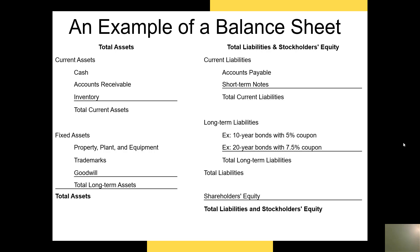Below current assets we have fixed assets, which include property, plant, and equipment, but also trademarks, copyrights, patents, and goodwill. The valuation of trademarks, patents, and copyrights depends on whether they were acquired by our company — if acquired, we can report them on the balance sheet according to GAAP principles; if created internally, we cannot. Goodwill refers to the premium paid to an acquisition target — any assets whose value cannot be separated from the acquired company. For example, if we purchased a company with a market cap of $1 million for $1.5 million, the additional $500,000 premium would be reported under goodwill.